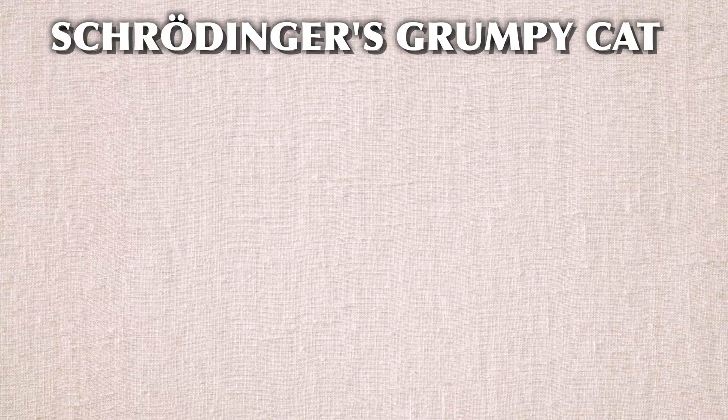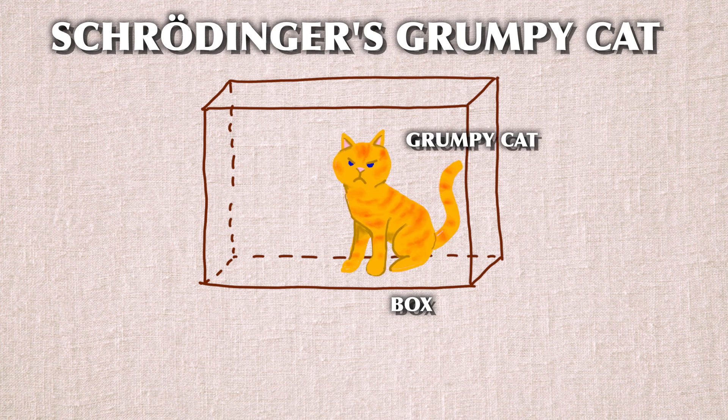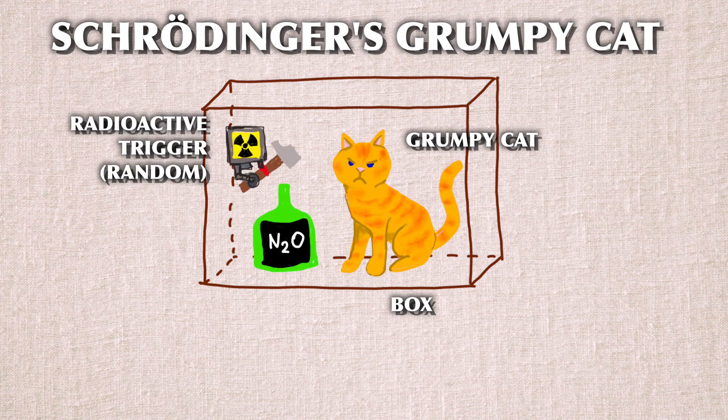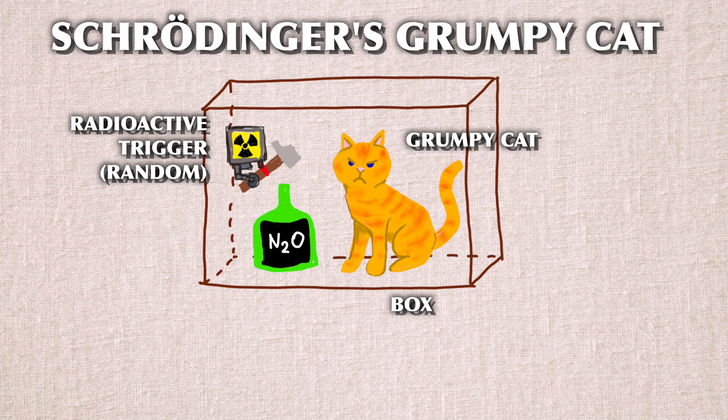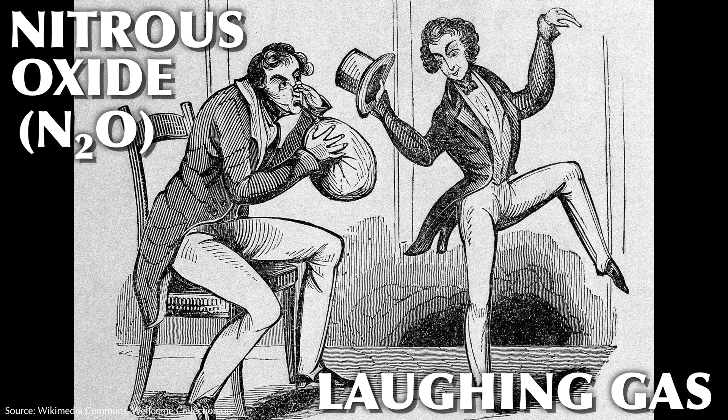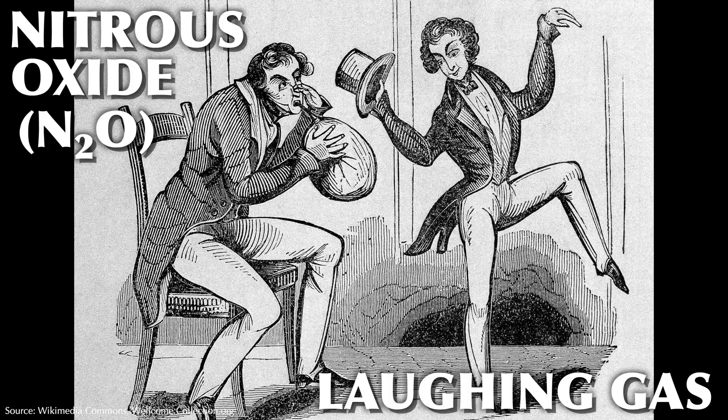So instead, I've come up with Schrödinger's grumpy cat and it goes like this. Inside the box is a very grumpy cat, together with a radioactive substance that will decay with a 50-50 probability in the given time interval. This decay will then trigger the release of nitrous oxide, also known as laughing gas.